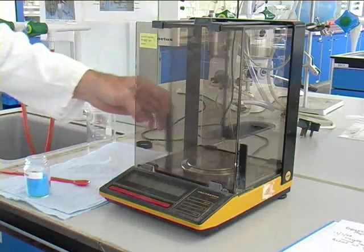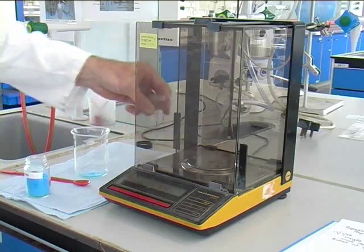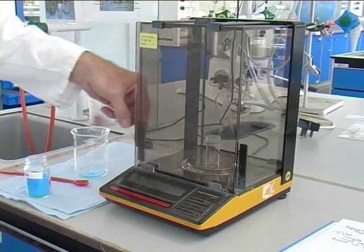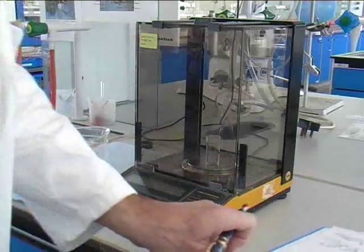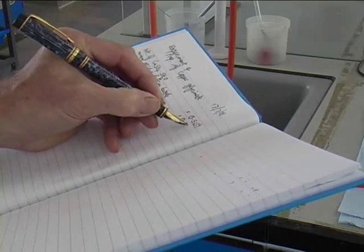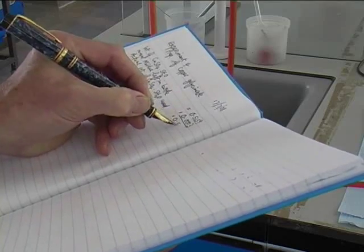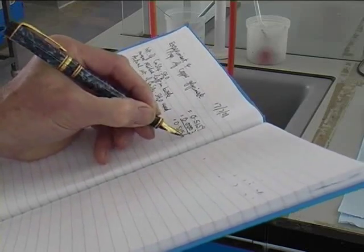Now we're going to empty the copper sulphate into the beaker and put the weighing bottle back onto the balance. This is called weighing by difference. I will record now the weight of the sample bottle and take that away from my original weight. That will give me the exact weight of copper sulphate I'm going to use in the experiment.